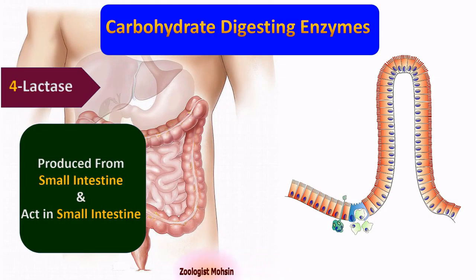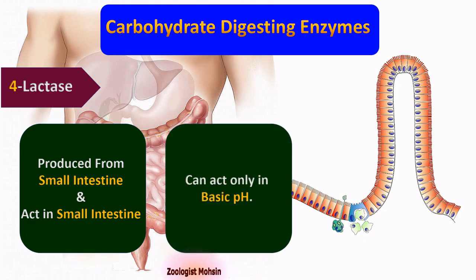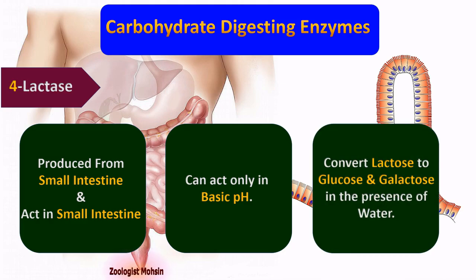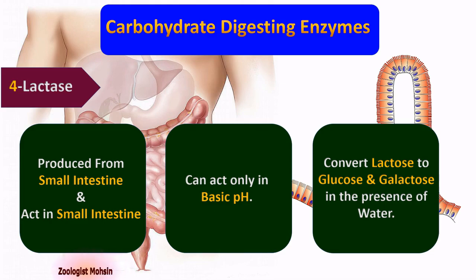Number four: lactase. Lactase is produced from the small intestinal wall and also acts in the small intestine. It can act only in basic pH, that is more than 7, and converts lactose to one molecule of glucose and one molecule of galactose in the presence of water.